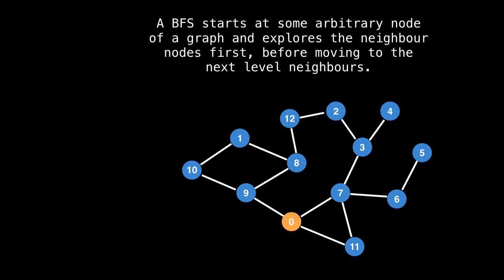So if we start a breadth first search at zero, we would visit zero first, then visit all of zero's neighbors. Then we would visit all of zero's neighbors, the nodes in yellow, before moving on to the next layer of nodes, then we would visit all their neighbors and so on.